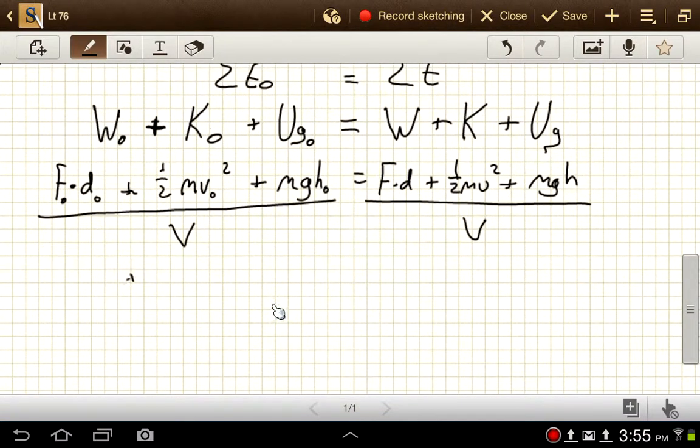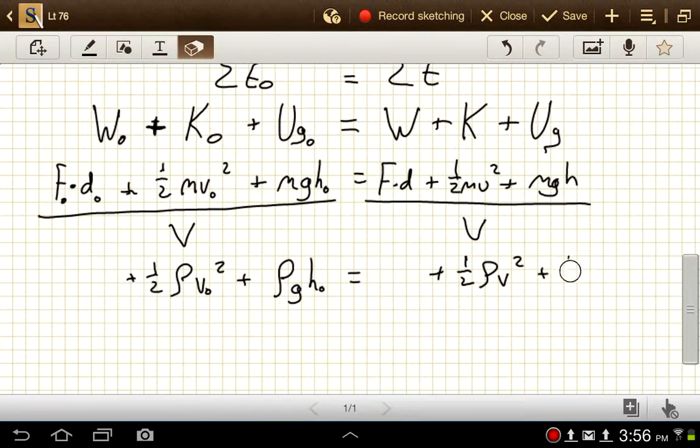Okay. So over here, we'll have one-half mass divided by volume. That's just density. mv nought squared plus mass divided by volume, density, times gravity, times h nought. And I'm leaving a little space for the work term. So plus one-half density v squared plus our density times gravity times the height.